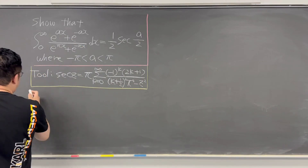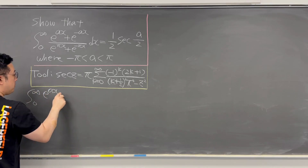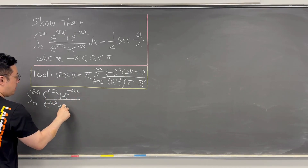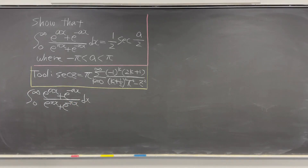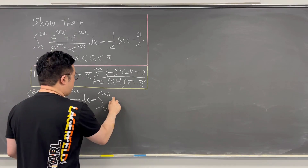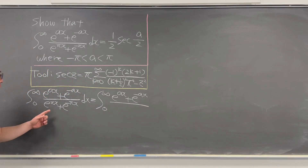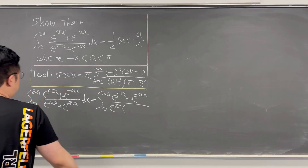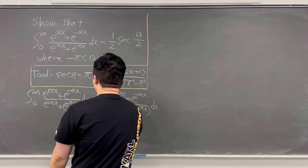First, let me rewrite this integral from zero to infinity: (e^(ax) + e^(-ax)) / (e^(πx) + e^(-πx)) dx. Let's work on the denominator — pull out e^(πx). So it becomes the integral from zero to infinity of the same numerator (e^(ax) + e^(-ax)) over e^(πx) times (1 + e^(-2πx)), then dx.